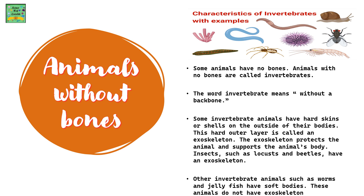Animals without bones: characteristics of invertebrates with examples. Some animals have no bones. Animals with no bones are called invertebrates. The word invertebrate means 'without a backbone.' Some invertebrate animals have hard skins or shells on the outside of their bodies. This hard outer layer is called an exoskeleton. The exoskeleton protects and supports the animal's body. Insects such as locusts and beetles have an exoskeleton. Some invertebrate animals such as worms and jellyfish have soft bodies and do not have an exoskeleton.